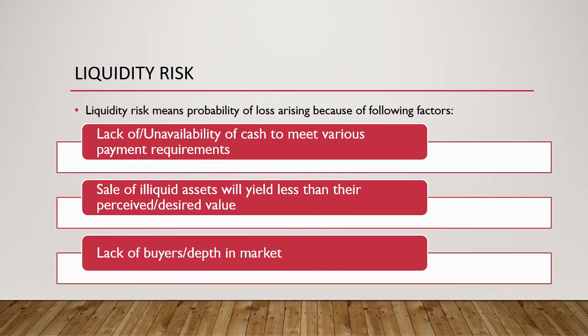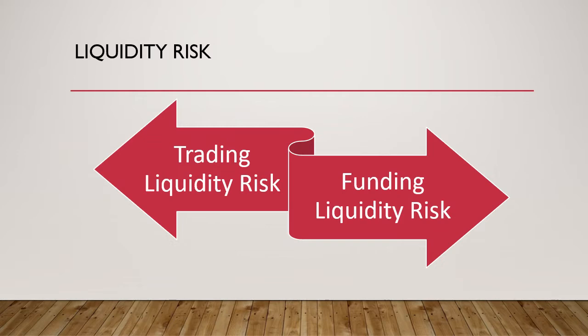One of the key indicators of liquidity risk is when you do not have sufficient buyers or depth in the market. So if we take the example of real estate or a house or mortgage, if you have got a home and you want to dispose of it but there are not enough buyers, that would create what is called liquidity risk. Whatever we have discussed in context of liquidity risk can be put under two buckets: trading liquidity risk and funding liquidity risk.